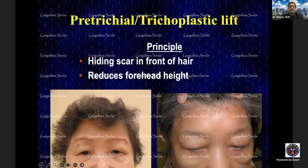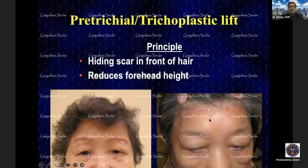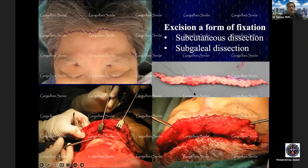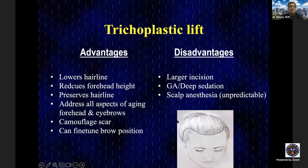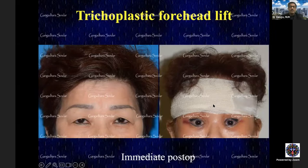The second most common brow lift in this practice is the trichophytic or pretrichial lift. In patients who comb their hair back with a tall forehead, the incision is hidden beautifully at the hairline. Significant forehead wrinkles can be completely eliminated. This procedure is done under deep sedation or ideally general anesthesia. Danger zones are marked. Subgaleal dissection is used, transitioning to subperiosteal plane approximately two centimeters above the orbital rim, followed by excision and fixation to achieve elevation.